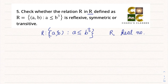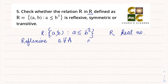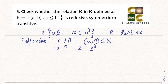Let's begin with reflexive. The reflexive condition is when, for all a belonging to set A, (a, a) belongs to the relation. So if we take number a = 1, then 1 ≤ 1³ = 1, which is true. Suppose I take 2, so 2 ≤ 2³ = 8, this will also be true.